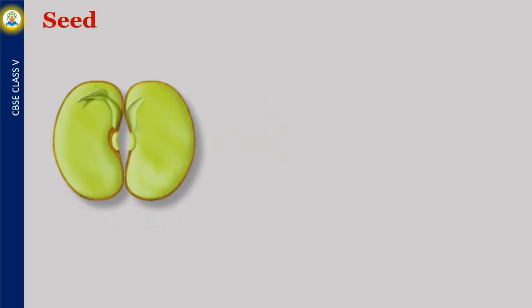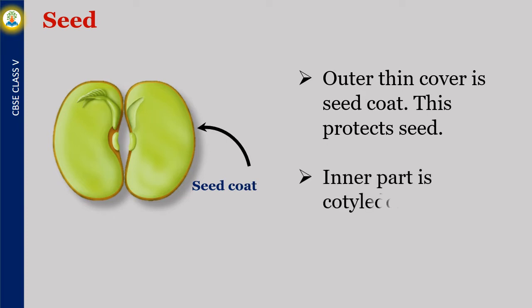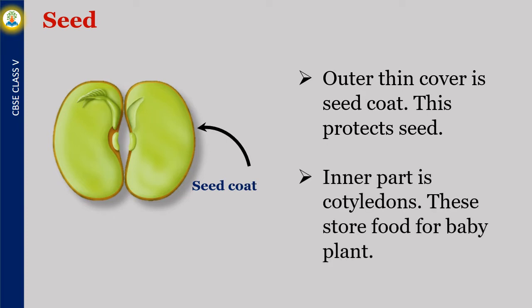Seed. Most fruits have seeds in them. New plants can grow from these seeds. Seeds have different parts. The outer thin cover is the seed coat, which protects the seed. The inner part is cotyledons, which store food for the baby plant.